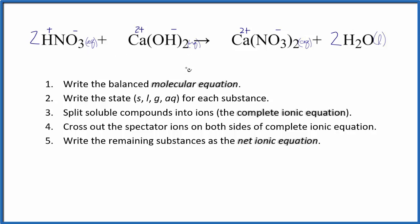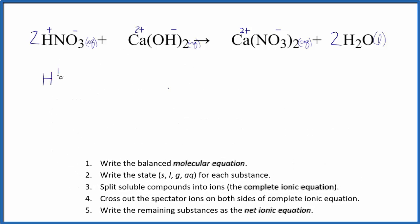We can now split everything up into a complete ionic equation. So we have H plus, and I'm not going to write aqueous after everything right now, plus NO3- plus Ca2+ plus OH-, and that's going to yield Ca2+ plus NO3- plus the H2O.